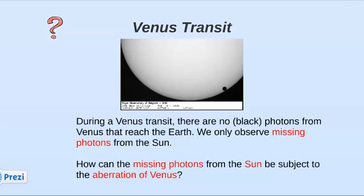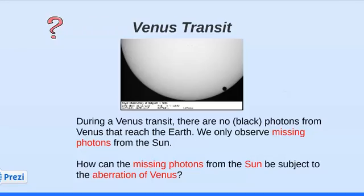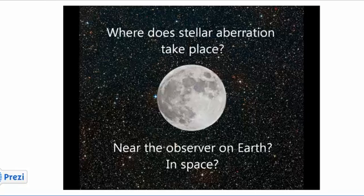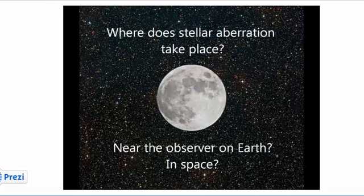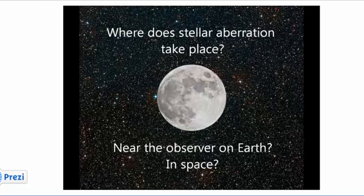Thinking about the Venus transit: we don't see photons from the planet Venus, but we see light coming from the Sun behaving exactly the same way as the aberration applicable to planet Venus. This can only be the case if light from the Sun, at the moment it passes the planet Venus, follows the exact same path as light transmitted from the planet Venus. This concludes the presentation, and I hope I was able to clarify my perspective on where the effect of stellar aberration takes place.